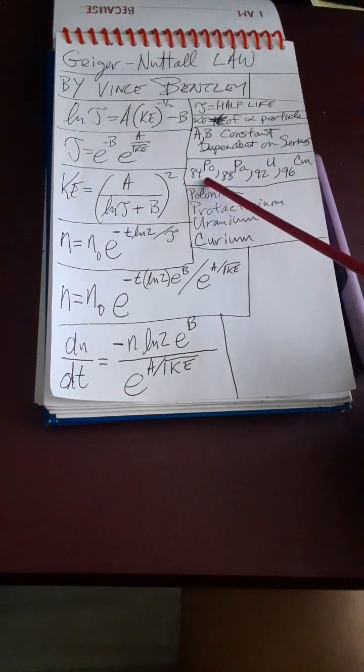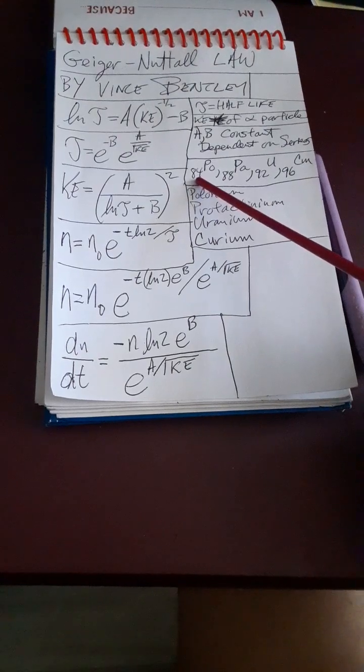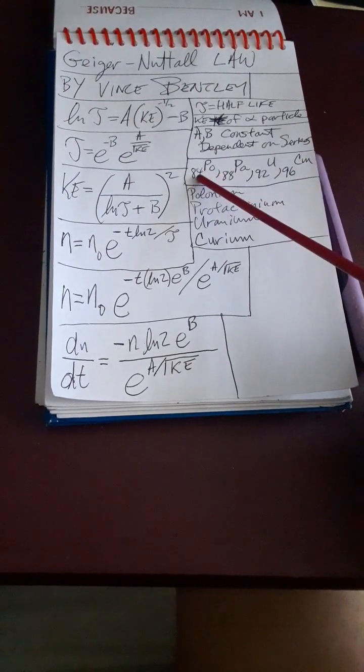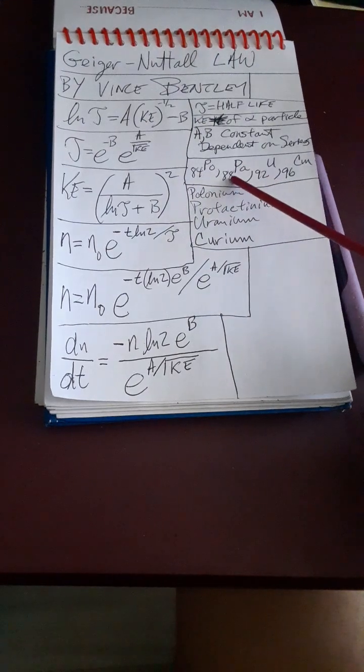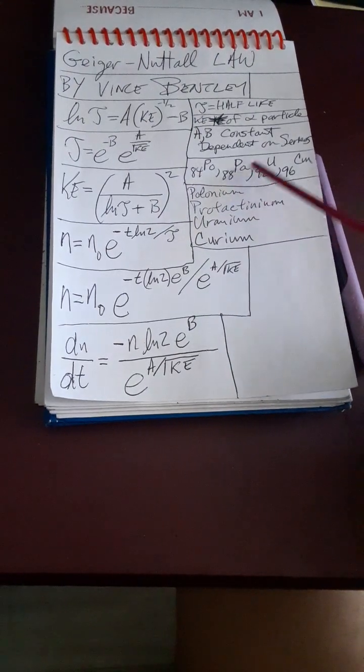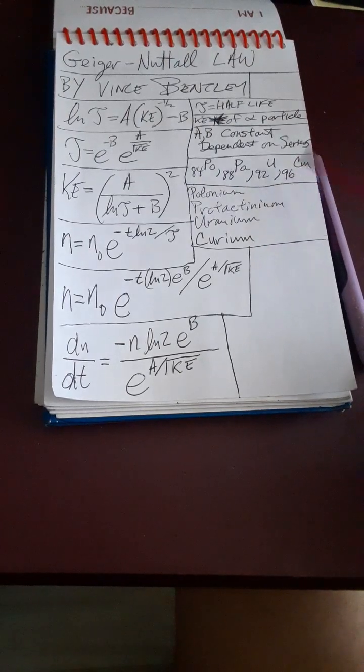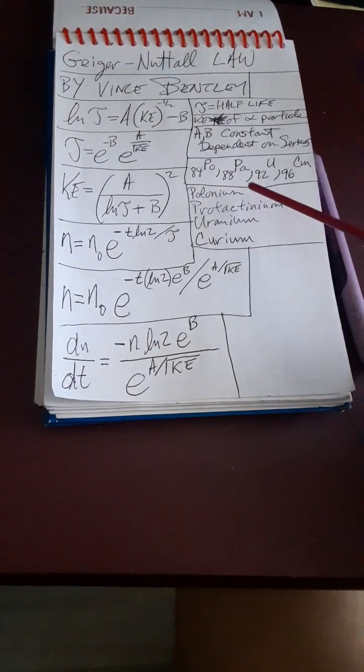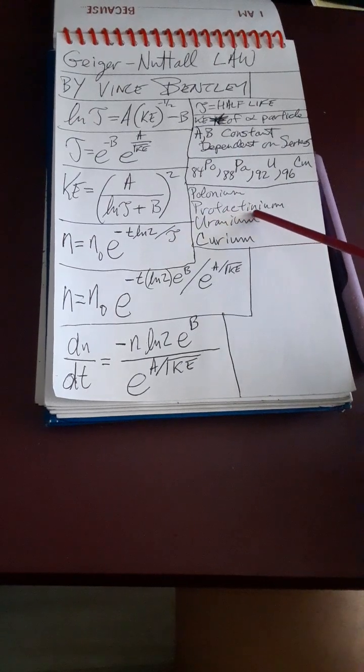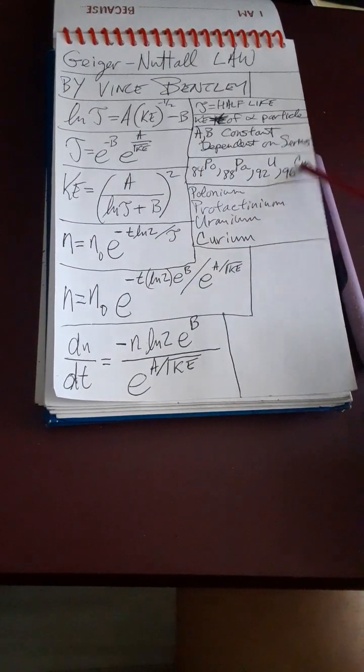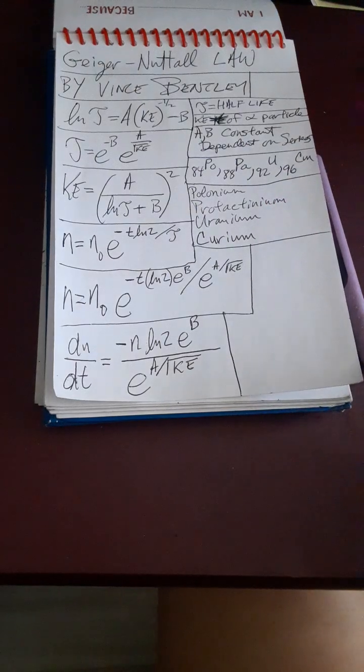As examples of radioactive series, if you want to see: polonium-84, protactinium-88, uranium-92, and curium-96. I misstated that.